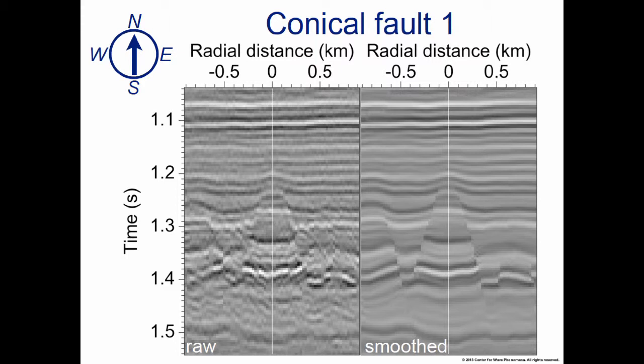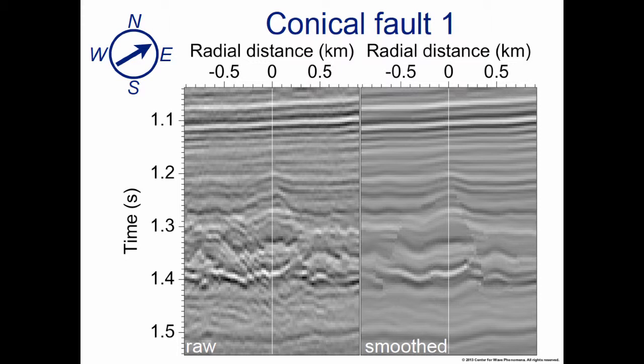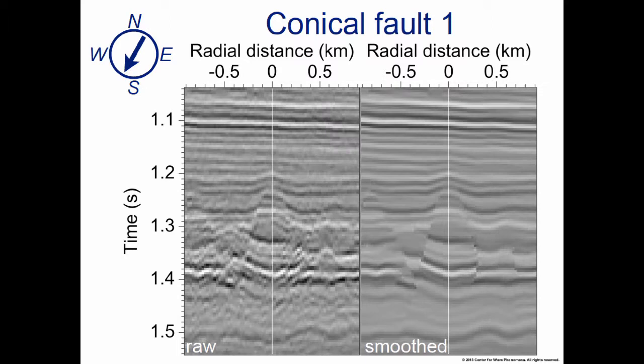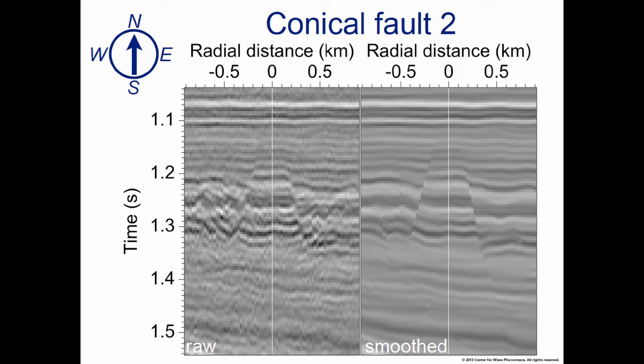I can do this for any azimuthal angle. I'm just showing you now what happens if I make a slice in the northeast direction. This is an example where we don't have much throw on the left-hand side of the image. You can see it on the smooth image on the right. We do have some throw on the right, but as we go around, we're just spinning around this axis to see this first conical fault. I'll do more quickly now the second one. This is fault number 2, the south-to-north image.